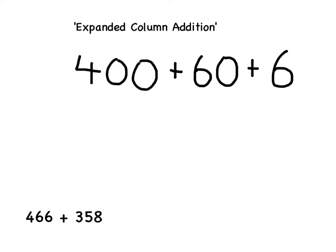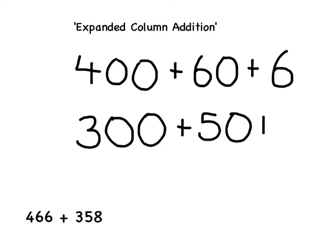We then repeat that for 358. So in 358 there are three hundreds, the 5 shows us there are five tens, and the 8 shows us there are eight units.